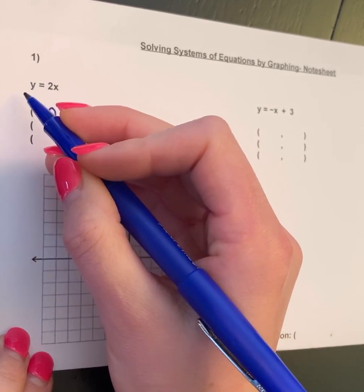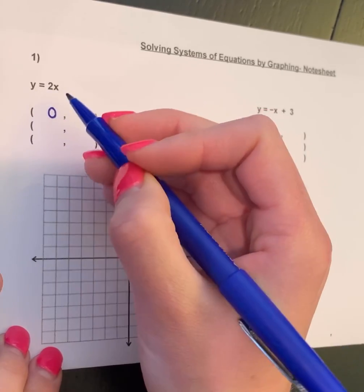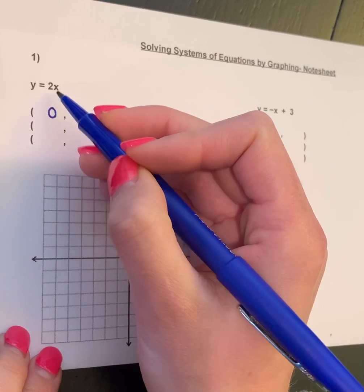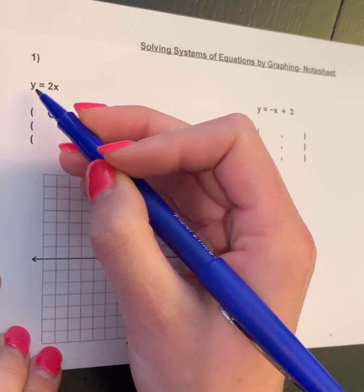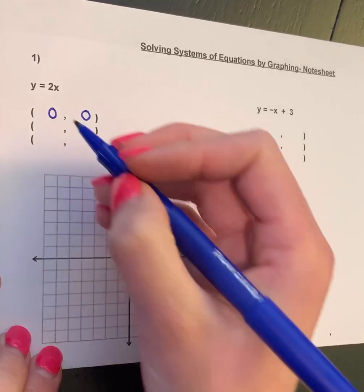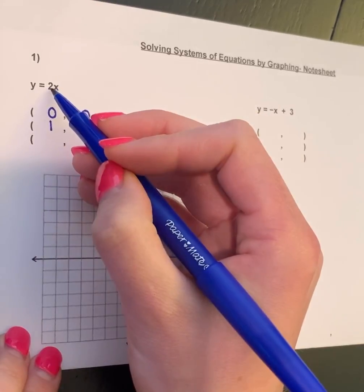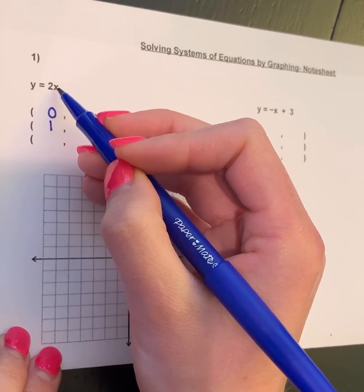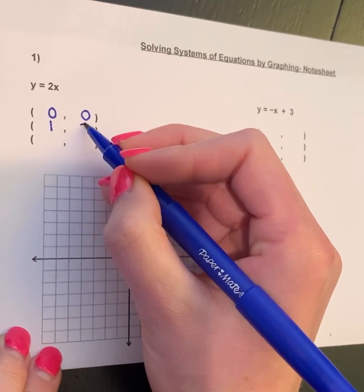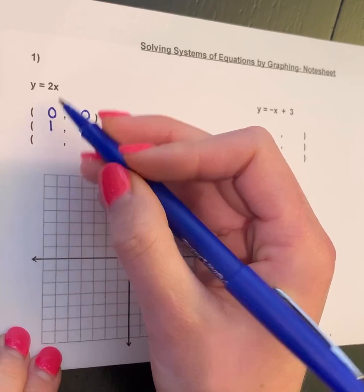When I plug 0 in for x, I get 2 times 0, so y ends up being 0. If I plug 1 in for x, 2 times 1, we just get 2 for our y value. I just made random points up; you could put 5 in, you could put 4 in. I just started off with smaller numbers I think are easier.